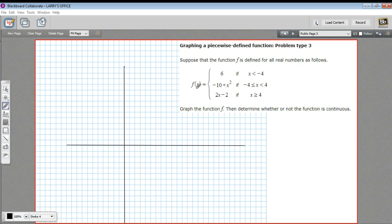This first line, what it says is the function value, or y value, is 6 if the x value is less than negative 4. So I'm going to go to negative 4 here, 2, 4, and I'm going to go up to 6.